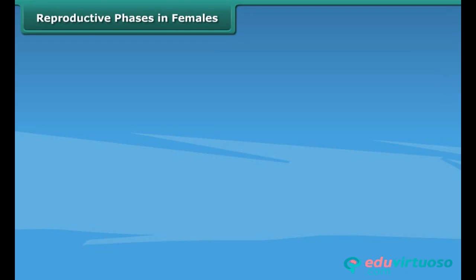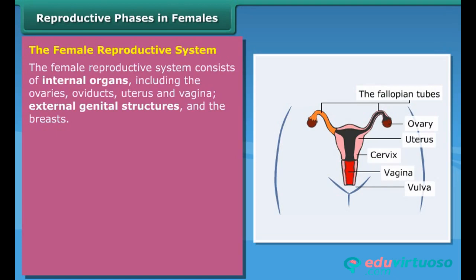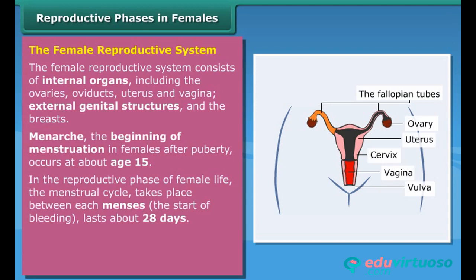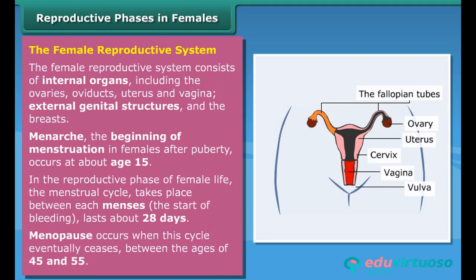Reproductive phases in females: the female reproductive system consists of internal organs including the ovaries, oviducts, uterus, and vagina, external genital structures, and the breasts. Menarche — the beginning of menstruation in females after puberty — occurs at about age 15. In the reproductive phase of female life, the menstrual cycle takes place between each menses; the cycle lasts about 28 days. Menopause occurs when this cycle eventually ceases, between the ages of 45 and 55.